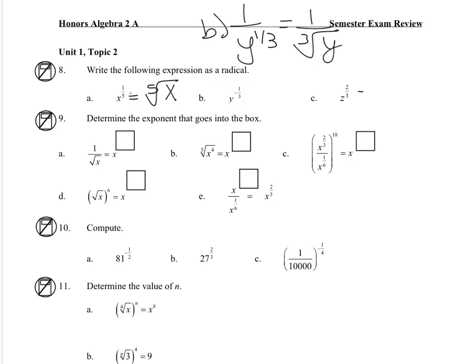And then for c, there's two ways you can write c. We can do the cube root of z squared, or you can do the cube root of z all squared.